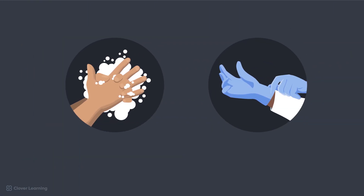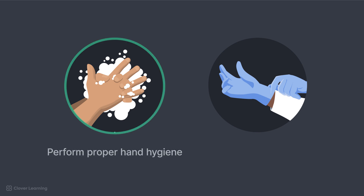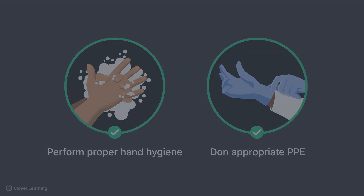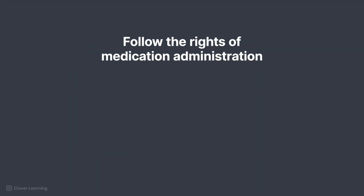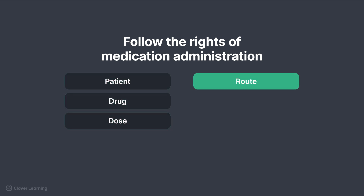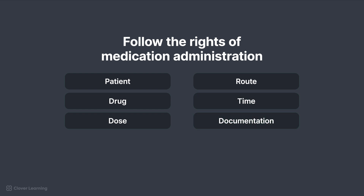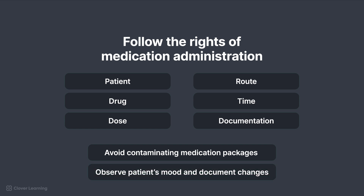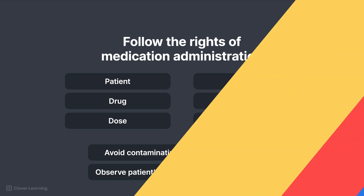Regarding the administration of psychotropics: as with all medication administration, perform proper hand hygiene and don appropriate PPE before administering any psychotropic medications. Follow the rights of medication administration — right patient, drug, dose, route, time, and documentation — with added precautions to avoid contaminating medication packages. Be sure to observe the patient's mood and behavior and document any changes.